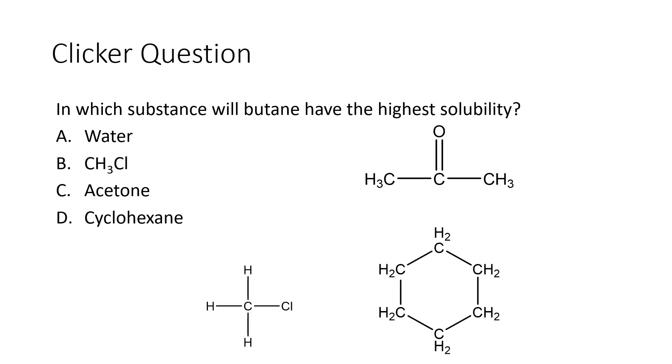Here's another example question. It's asking, in which substance will butane have the highest solubility? So once again, we need to compare intermolecular forces. Our four answer choices are things that are commonly used as solvents: water, chloromethane, acetone, and cyclohexane. Water, we already know from that last example and some previous ones, is a hydrogen bonded substance.